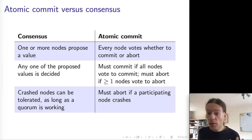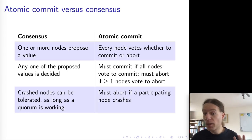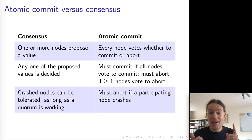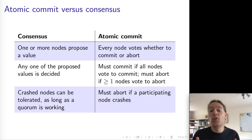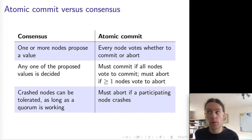With consensus we've seen algorithms like Raft which can continue working as long as a quorum of nodes is reachable. But with atomic commit, because all nodes must vote and we must get unanimity across all of them, even just one single node crash will cause the entire transaction to abort. Atomic commit is not able to tolerate any faulty nodes, whereas a fault-tolerant consensus algorithm like Raft is able to tolerate a minority of faulty nodes.